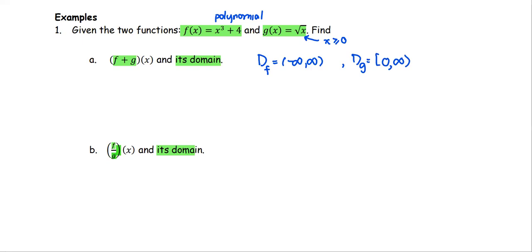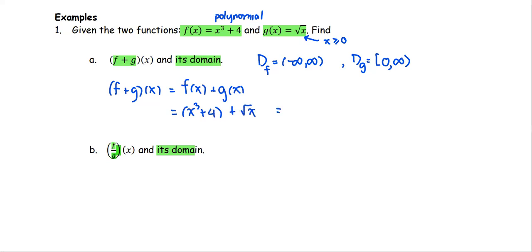Now when we combine the two functions, f plus g of x is the same as f of x plus g of x, where f of x is x to the third plus four, and g of x is square root of x — combined to give x to the third plus four plus square root of x. Since there are no like terms, this is the sum of those two functions. Next, we're going to look at the domain of f plus g, which is the common part of the domain for both functions.